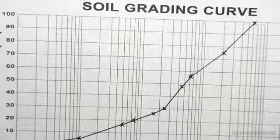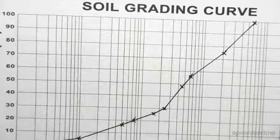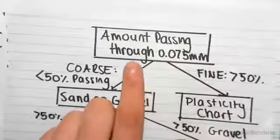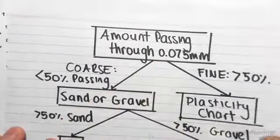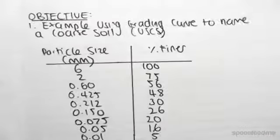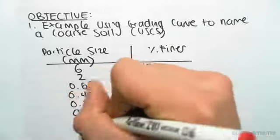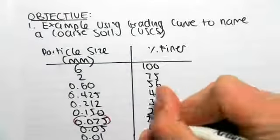The first thing we need to do, as always, is look at our flowchart and determine the amount passing through 0.075 millimeters. If we come back to our table, this critical value of 0.075, 20 percent has passed through.